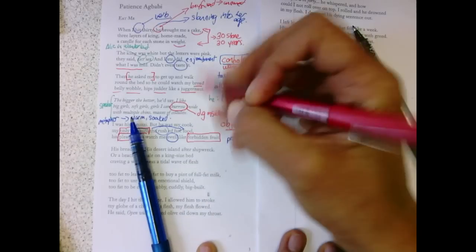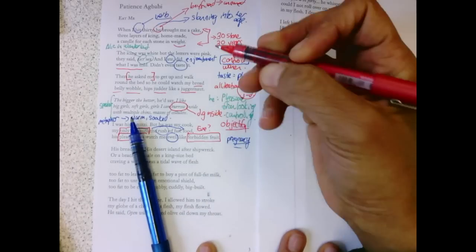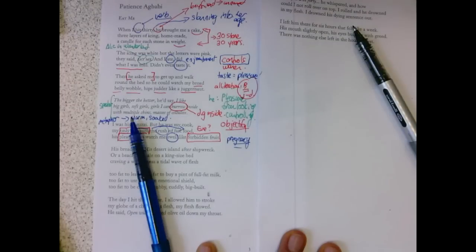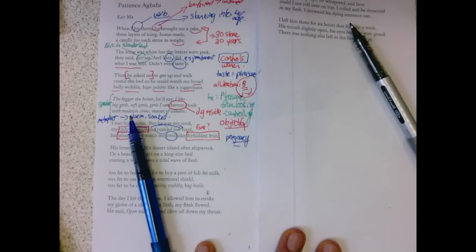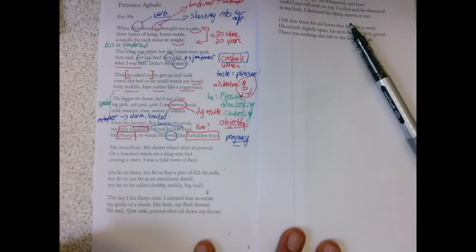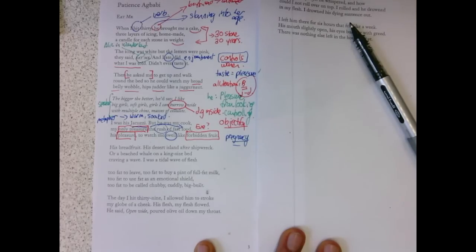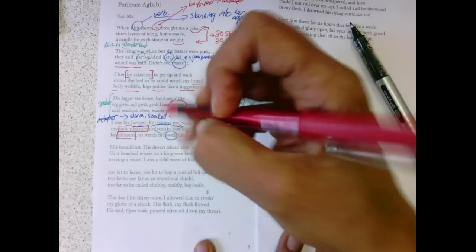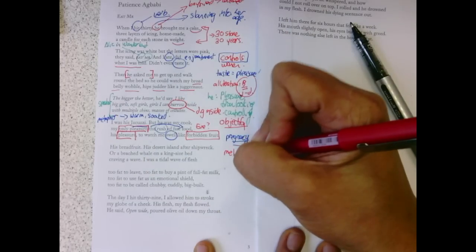But no, it's something like forbidden fruit, which makes us think of Adam and Eve. But it also makes us realize that there's something wrong in what's happening here. There's something negative that shouldn't be going on. His breadfruit, this large fruit. We get this series of metaphors.